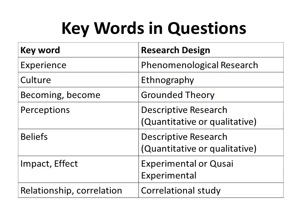The keywords which help you identify the research design are not a strict rule of thumb. I have identified these keywords to help you understand what kind of research design is appropriate for certain research questions. I developed this table based on my own experience to help beginning researchers identify an appropriate research design. If you see the word 'experience' in your research question, then the most appropriate research design would be phenomenological.